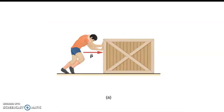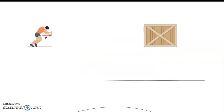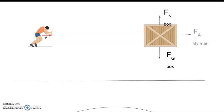Let's take a look at another example — a man pushing a crate across a rough floor. So let's break everything down. Starting with the crate: we've got a downward force of gravity, an upward force normal, a rightward applied force from the man, and we're going to resist that sliding with force of friction.